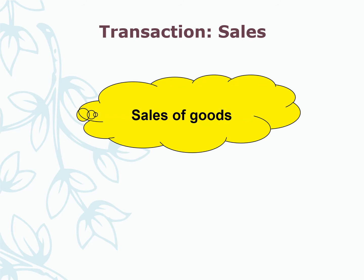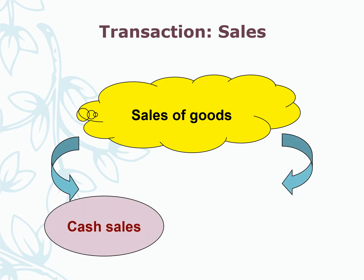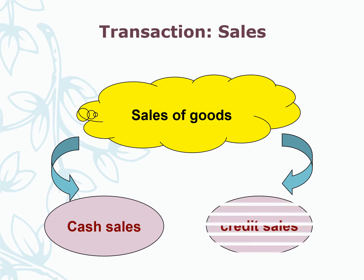The term 'sales' is used for sales of goods or merchandise. There are two types of sales: first is cash sales and the second one is credit sales.